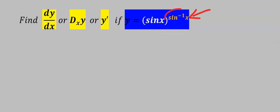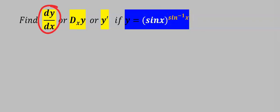We need to bring the sine inverse of x to the back of sine x. To solve for the derivative of this function, step number one, we are going to take the natural log of both sides.